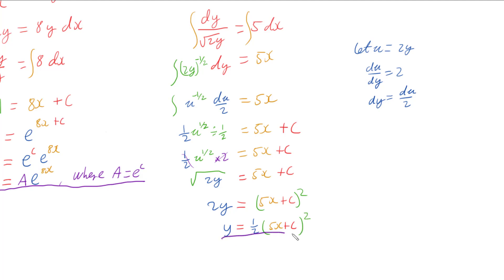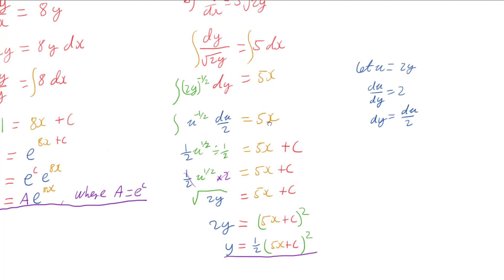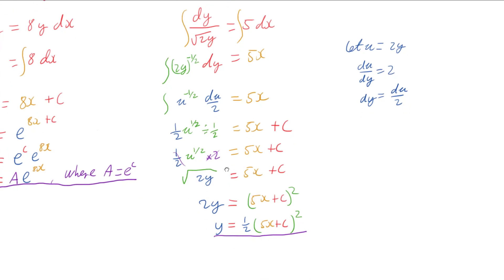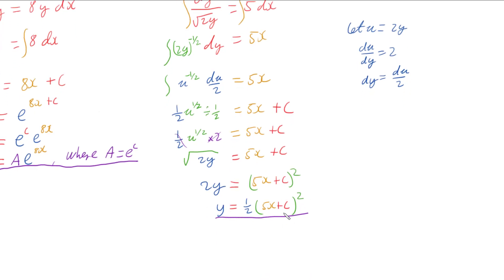And so now we're done. This is the general solution of the differential equation dy/dx equals 5 times the square root of 2y. This time our constant's not sitting at the front, it's trapped inside here, but that's okay. It is still part of our solution.